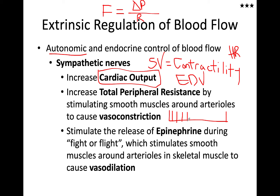This will maintain homeostasis, but if we need to alter these components, we start creating more action potentials. When the action potentials are spread apart and relatively slow, it actually causes vasodilation. Constriction would occur when the frequency of action potentials from the sympathetic neuron are high.